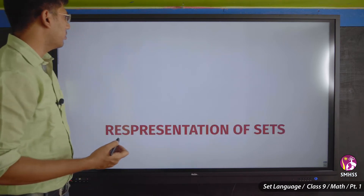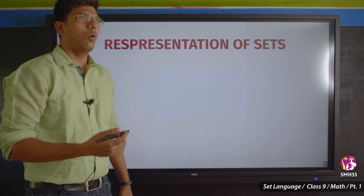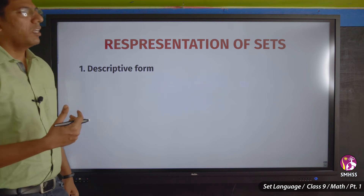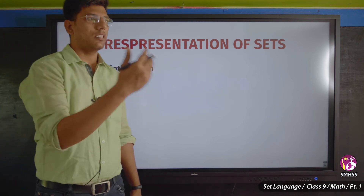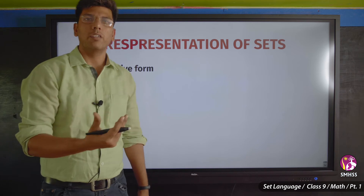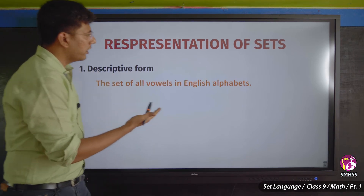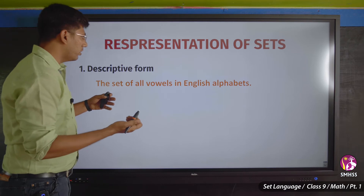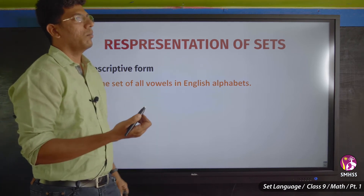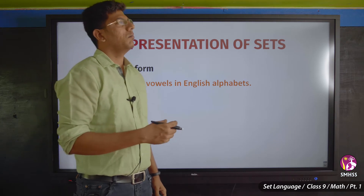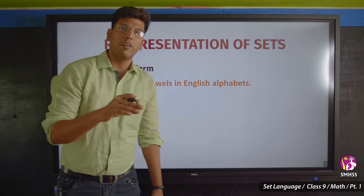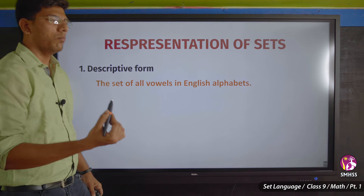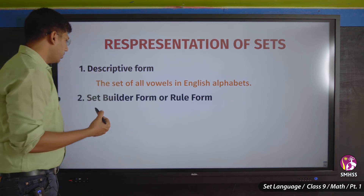There are three ways to represent a set. The first is the descriptive form — you write it as a sentence. For example: 'the set of vowels in English alphabets: A, E, I, O, U.' You can also say 'the set of natural numbers' or 'the number of elements between 5 and 10: 6, 7, 8, 9, 10.' This sentence form is called descriptive form.